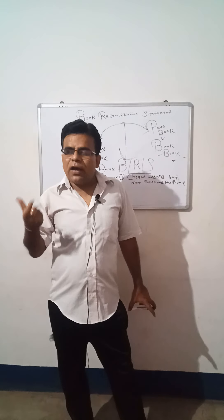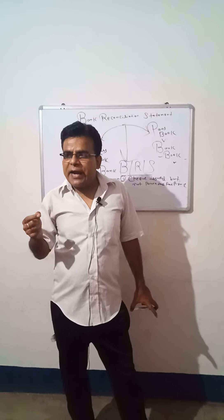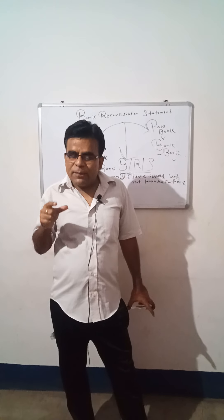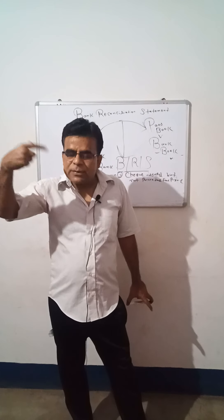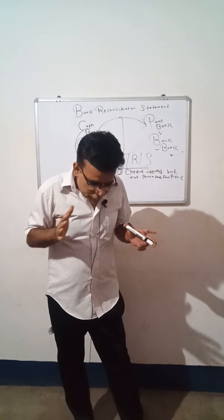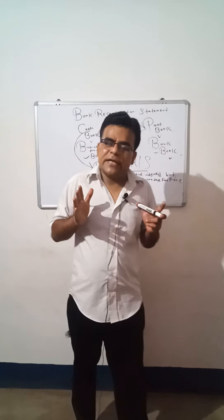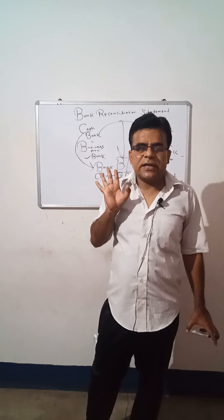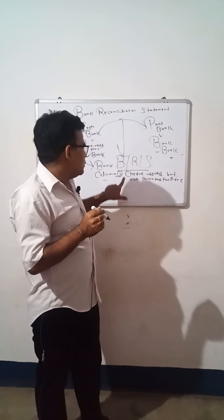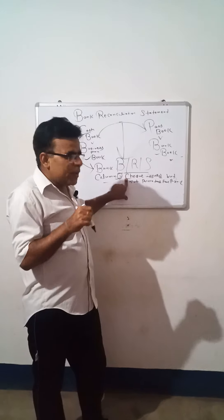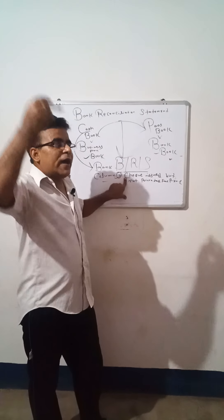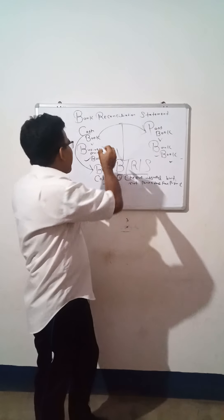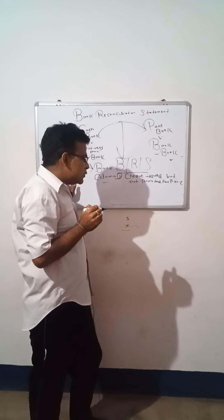For example, in July, if we issued a cheque to a party, and they presented it in August — since a cheque is valid for 3 months — if payment is made in the next month, what difference would that cause?